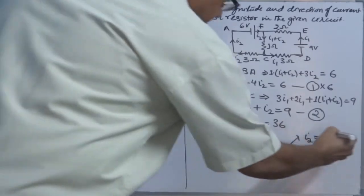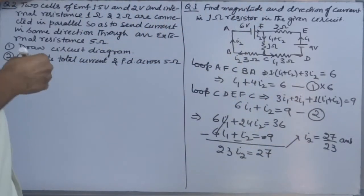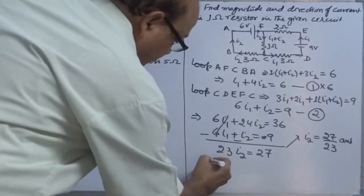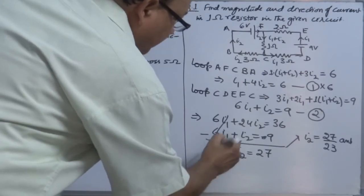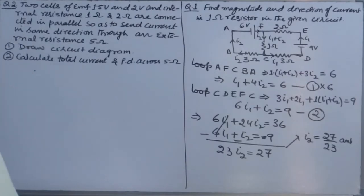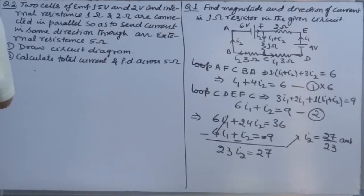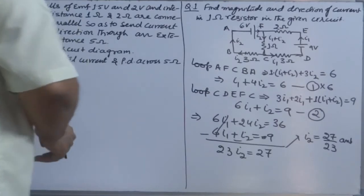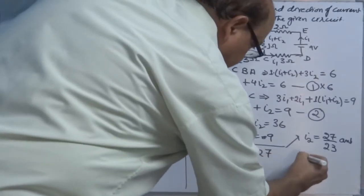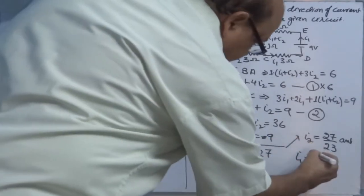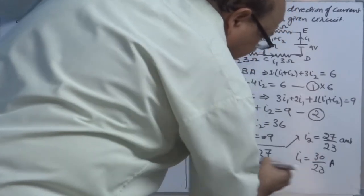Substitute this value of I2 into any one equation — putting it in the first equation, I1 comes out. You will get I1 = 30/23 by putting in any other equation.